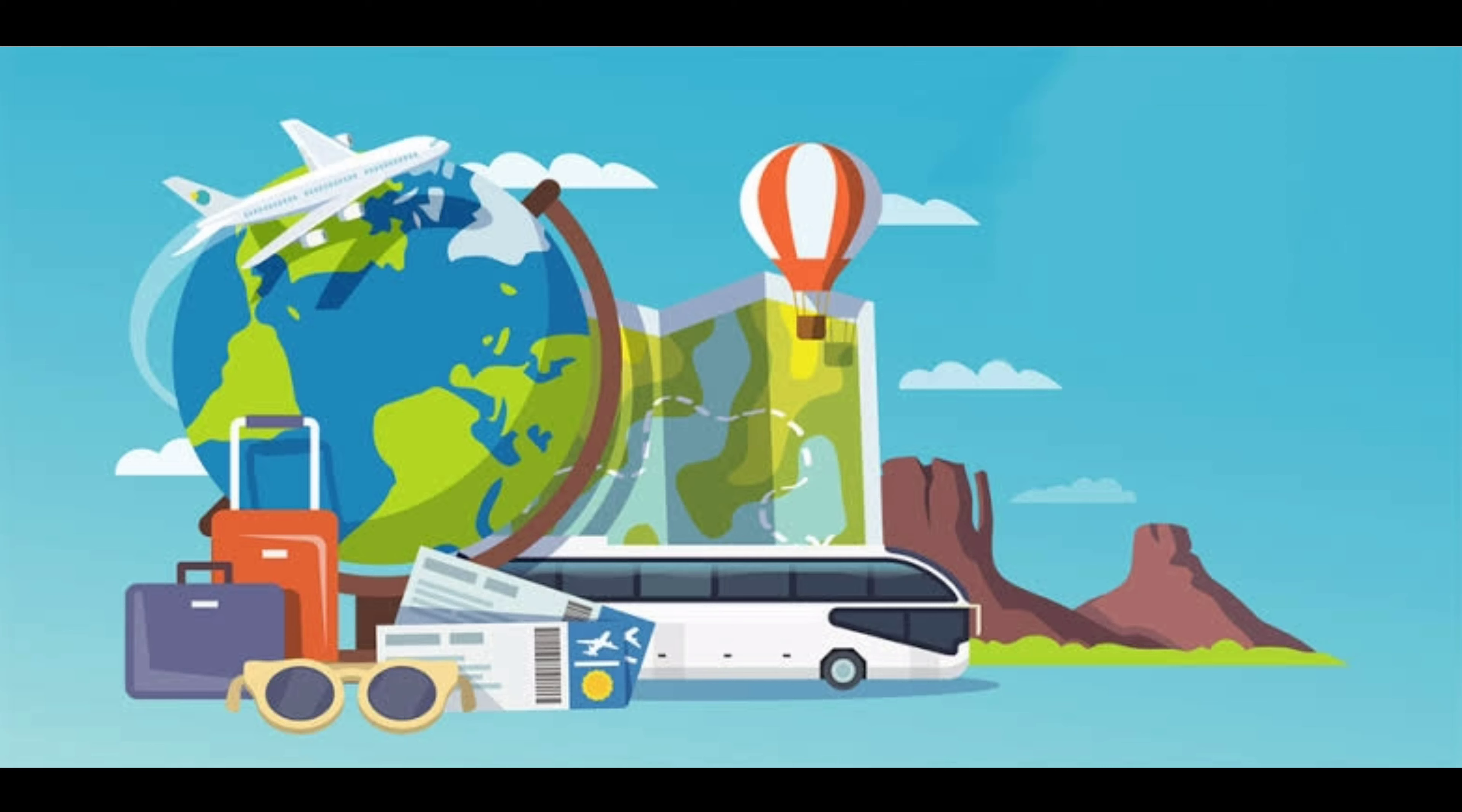You can take bus number 706 and then get down at Chalk. From there, it's a 2-minute walk to reach the station.